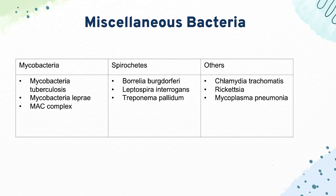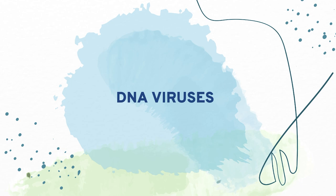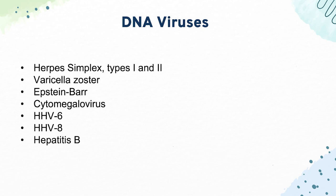We made it through our bacteria. Now let's get started on our DNA viruses. Starting off with herpes simplex types 1 and 2 — these cause cold sores, herpetic whitlow, temporal lobe encephalitis in the context of HSV-1, and herpes genitalis in the context of HSV-2.